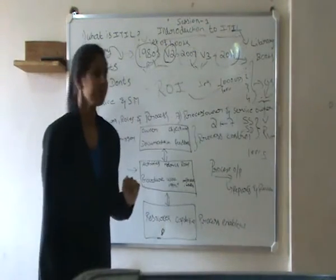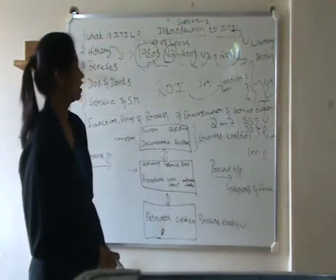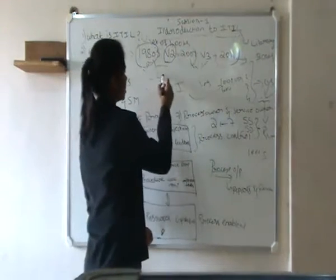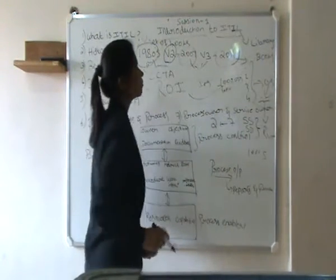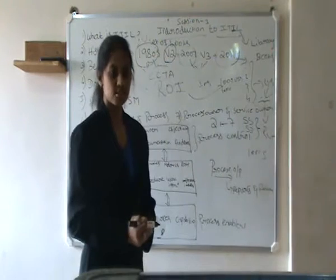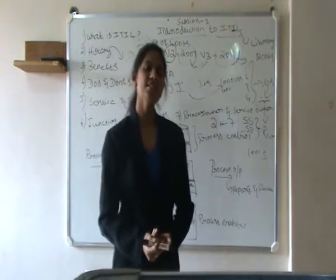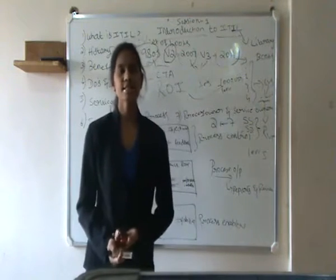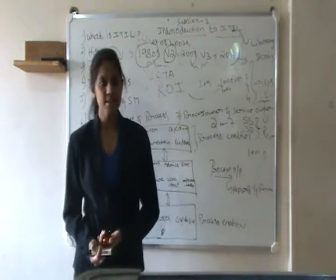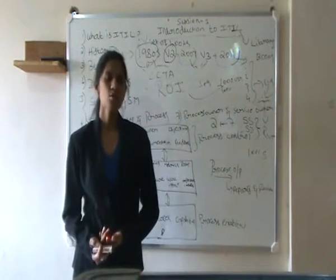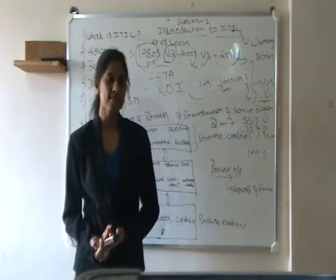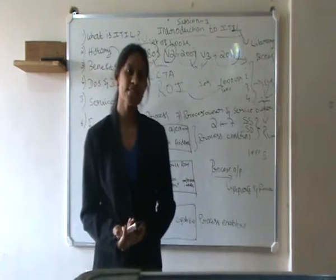The British government hired an agency called CCGA, which is Central Computer and Telecommunications Agency and asked them to do a survey in the IT industries to understand what are the best practices they are adapting and also what are the drawbacks that the companies are facing in 1980s.